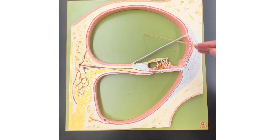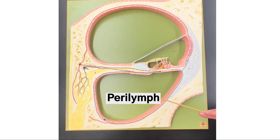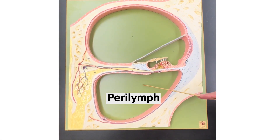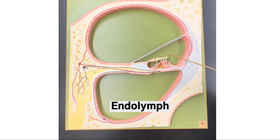In the scala vestibuli and scala tympani, we have perilymph. And then in the scala media, we have endolymph.